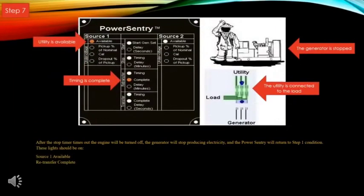Step seven: after the stop timer times out, the engine will be turned off. The generator will stop producing electricity and the power sentry will return to step one condition. The source one available light is on, the generator is not running, the retransfer timing light has gone to complete, and the utility is connected to the load via the green contactors. Now you're ready for another power outage.